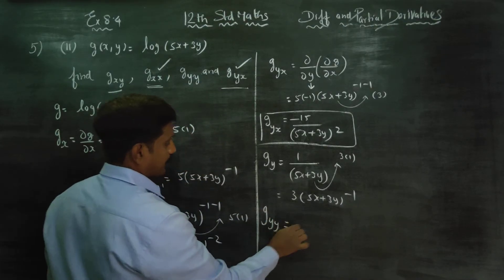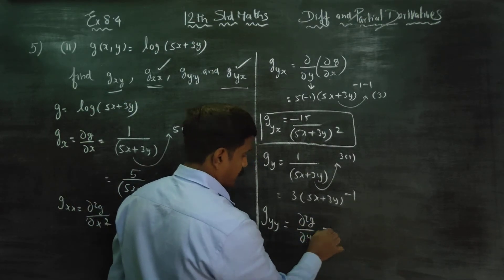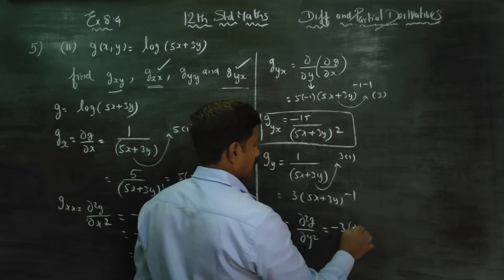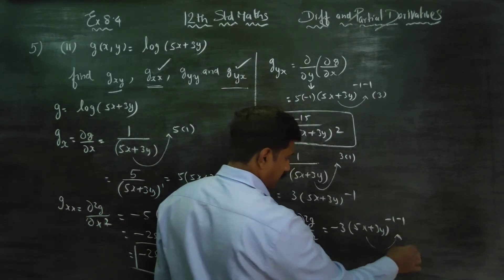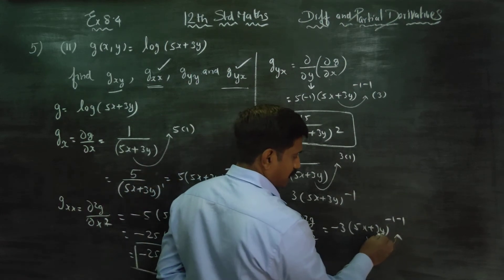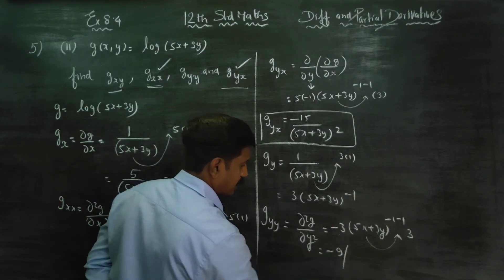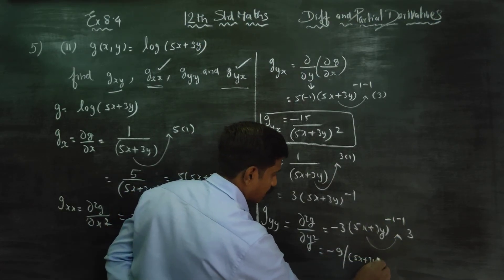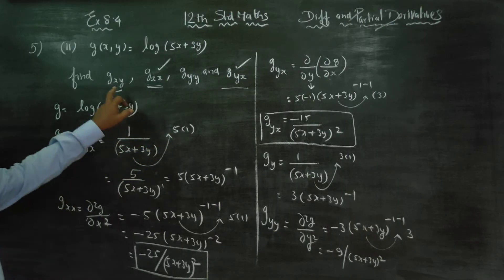What is the meaning of gyy? It is ∂²g/∂y². Applying power rule: minus 1 into 3, giving minus 3 times (5x plus 3y) to the power minus 1 minus 1. By chain rule with respect to y, we get 3. The answer is minus 9 by (5x plus 3y) whole square. This is gyy.